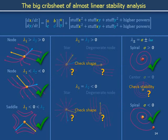To summarize, nodes, saddles, and spirals obtained from linear analysis locally, qualitatively carry over to the actual system, but stars, degenerate nodes, and centers are sources of concern.